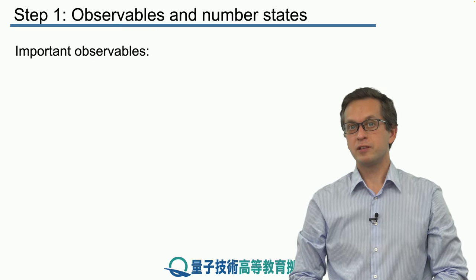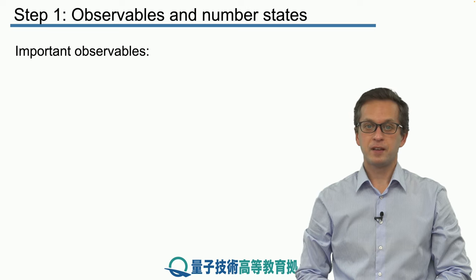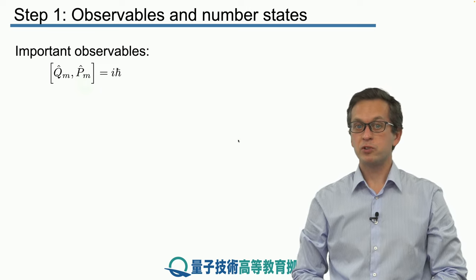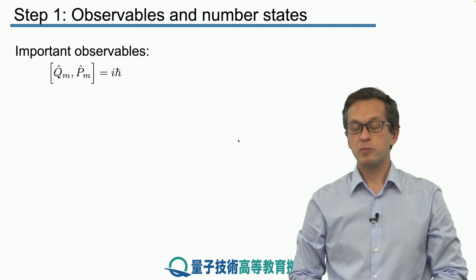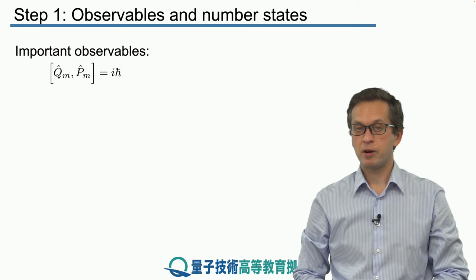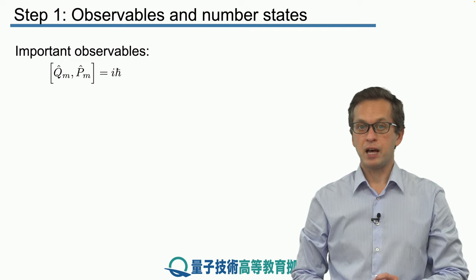So what are the important observables? They are the Q and P operators that we introduced in the previous lesson. Q and P are related to the real part and the imaginary part of the complex field amplitude E.